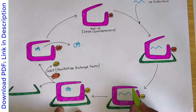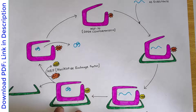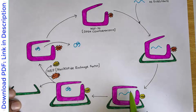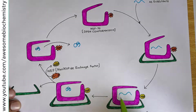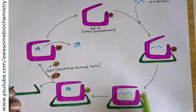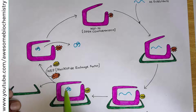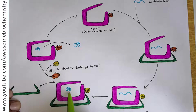This energy is utilized to close the C-terminal domain lid. So now this C-terminal domain lid is in the closed conformation, and our unfolded protein is trapped inside this central protein cavity. In this protected environment, this unfolded protein undergoes proper folding. As you can see, the protein is now properly folded, and ADP and HSP40 are still in place.